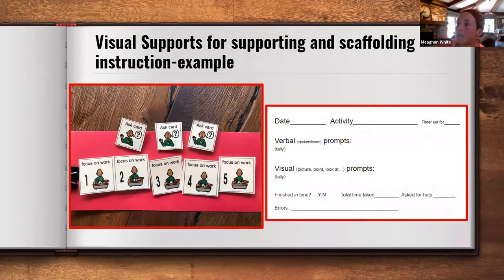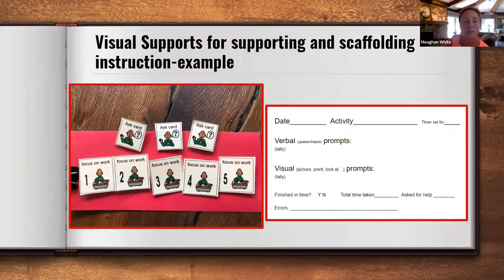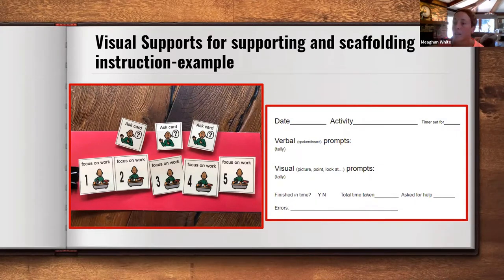Another example of visual supports and fading: the student started with five warnings and three asks. He had a hard time focusing on his work, so this helped him. There was a data sheet so he could help take data collection on that and set goals for himself. Once he got better, instead of having five, he would have three focus warnings. This was mirrored in his general education class as well, and it faded completely eventually.